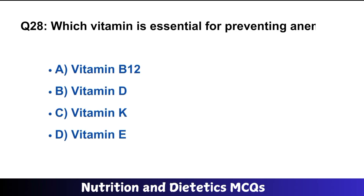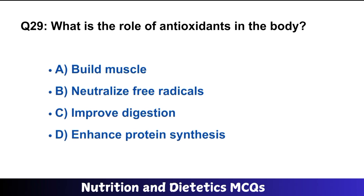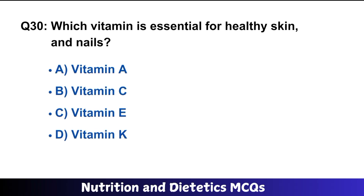Question number twenty-eight: which vitamin is essential for preventing anemia? A is the right option: vitamin B12. Question number twenty-nine: what is the role of antioxidants in the body? B is the right option: neutralize free radicals. Question number thirty: which vitamin is essential for healthy skin, hair, and nails? C is the right option: vitamin E.